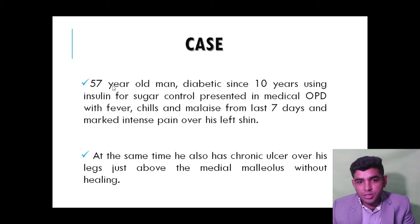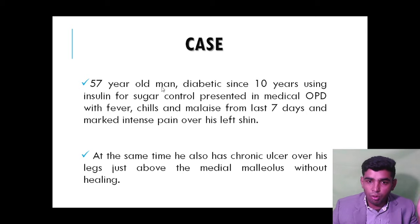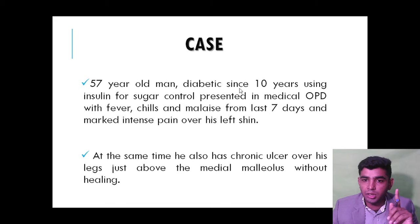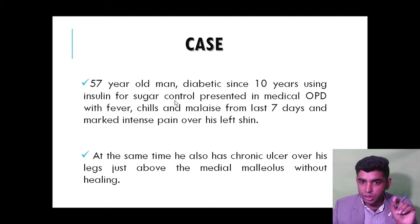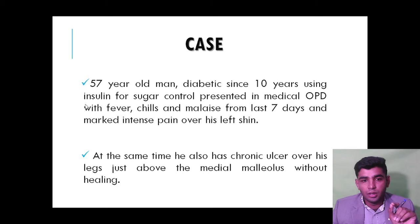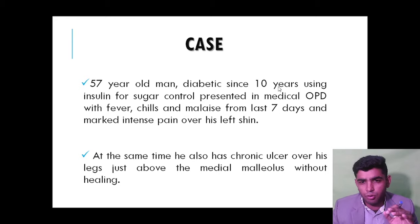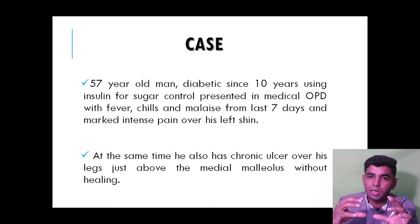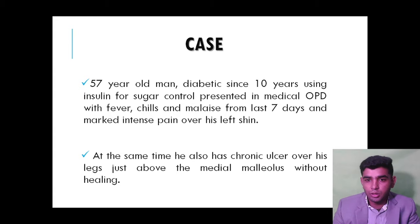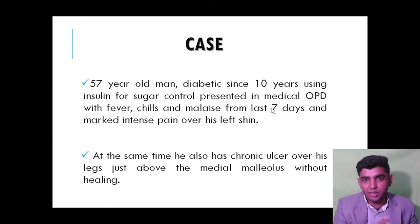A 57-year-old man, old age and diabetic, diabetic since 10 years using insulin for sugar control. He presented in the medical OPD with fever, chills, and malaise — meaning restlessness and inability to work — from the last seven days. Since it is from the last seven days, this is mainly the acute form.